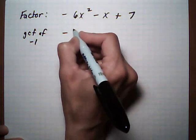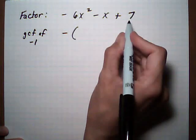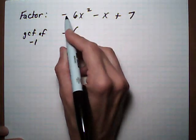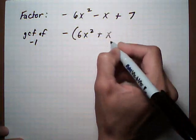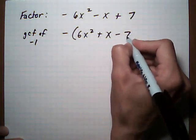Pull out the negative sign, and everything on the inside is going to switch signs. So this minus 6 becomes positive 6x squared, minus x becomes plus x, plus 7 becomes minus 7.